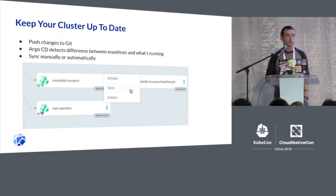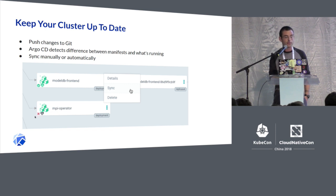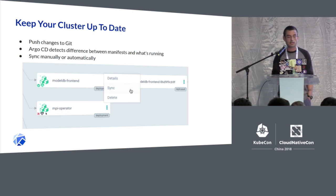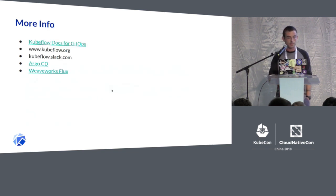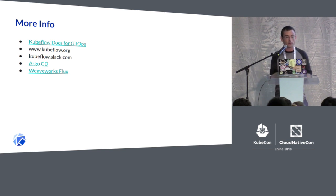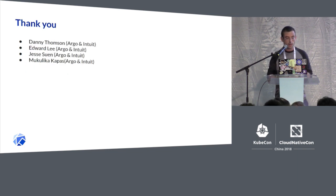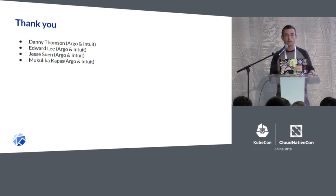Now if you want to make a change to your cluster, you just change the manifest. In this case, we've changed the configuration of one of the operators. In the Argo UI, you can see a red box showing that your cluster is no longer in sync, and then you can use Argo CD to automatically sync those changes to your cluster. For more info, you can look at the Kubeflow docs at kubeflow.org, and also the Argo CD docs to learn more about Argo. A big thank you to the Argo team at Intuit who helped us put this together. Thank you very much.